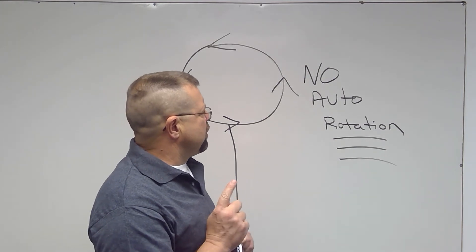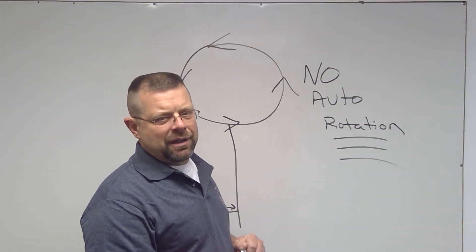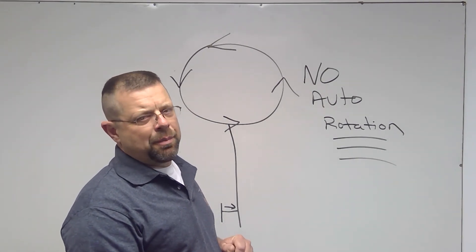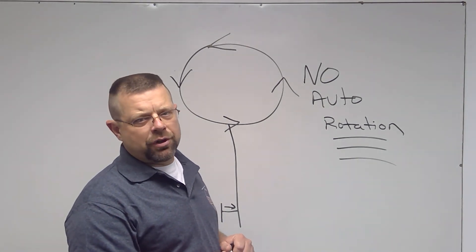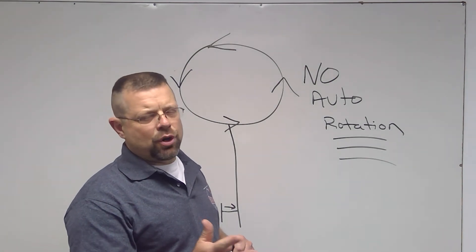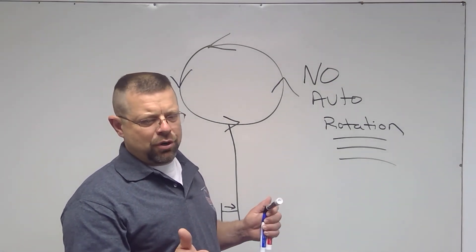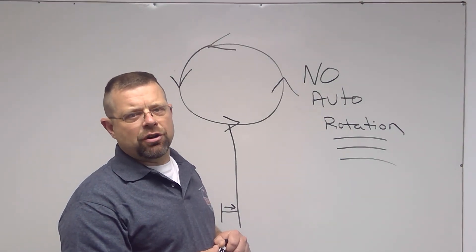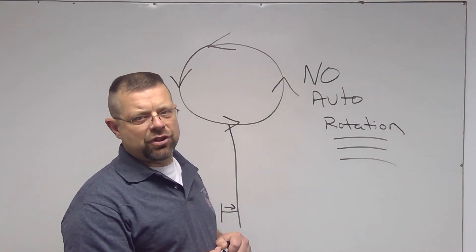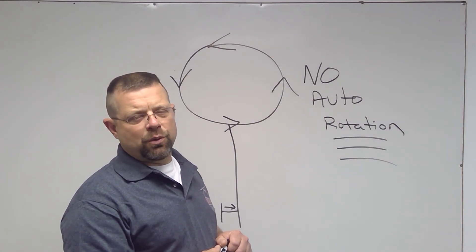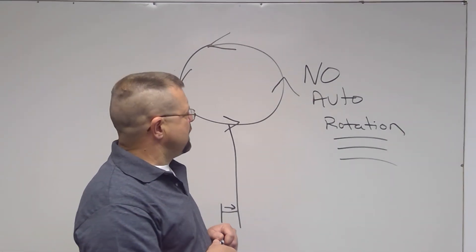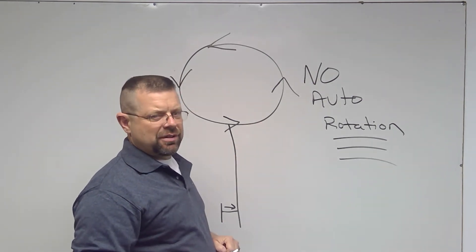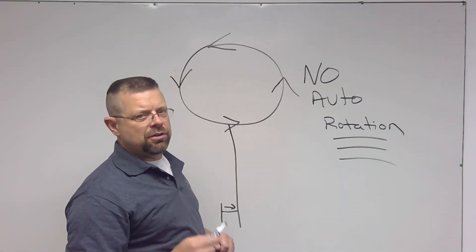So it is important to know the difference between the tail rotor emergencies. We talked in another video about total loss of tail rotor. Whether it be the shaft broke or the tail rotor gearbox broke, you lost the tail rotor altogether at altitude. You enter an auto rotation with that emergency. There is no other way to handle that emergency. Stuck pedal, you cannot do an auto rotation. This has to be a slide-on. Do not get the two confused.